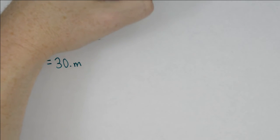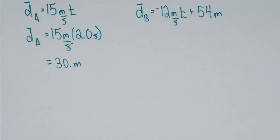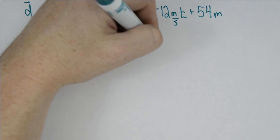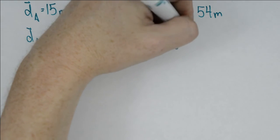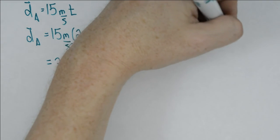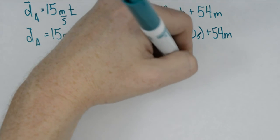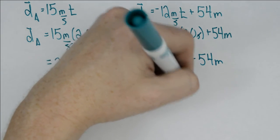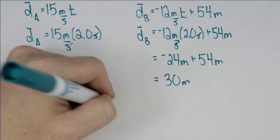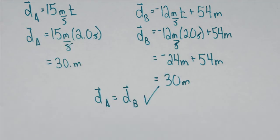It's imperative that dB give us the same thing. If it doesn't, what has happened is we've been inconsistent. So we recall that dB is negative 12 meters per second times time plus 54 meters. Again, we put in our time, two seconds. And when we solve everything, we find that we also end up with 30 meters. And so therefore, we have our necessary condition, dA is equal to dB.